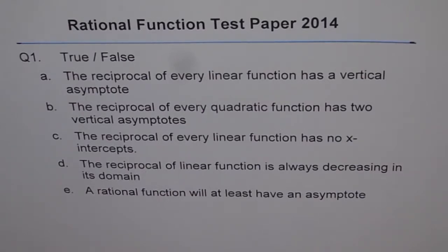B. The reciprocal of every quadratic function has two vertical asymptotes. C. The reciprocal of every linear function has no x-intercept. D. Reciprocal of linear function is always decreasing in its domain.